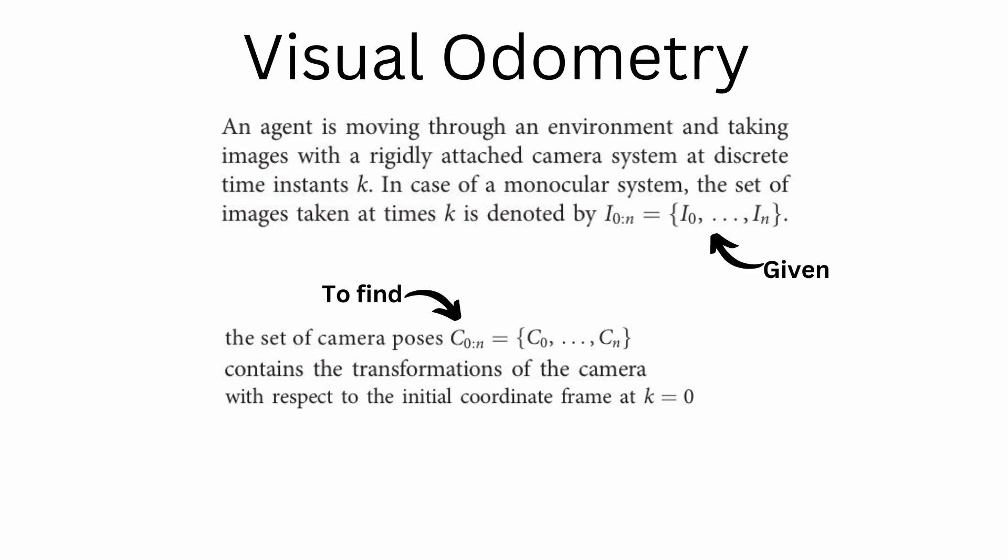This means that if you can incrementally find the camera pose, you will get the robot's pose at each time instant. That's done incrementally. So that is our problem statement. This is what's given: all the images from time instance 0 to n, and we want to find out C_0 to n, and C is the camera pose. This set of camera poses C contains camera transformation of the camera with respect to the initial coordinate frame at k equals to 0. So this is our problem statement.